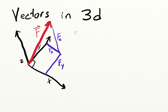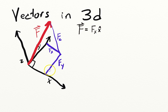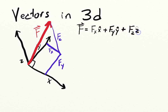There are lots of different ways to write the force vector F. One way is to write it by components: F sub x in the x-hat direction, plus F sub y in the y-hat direction, plus F sub z in the z-hat direction.